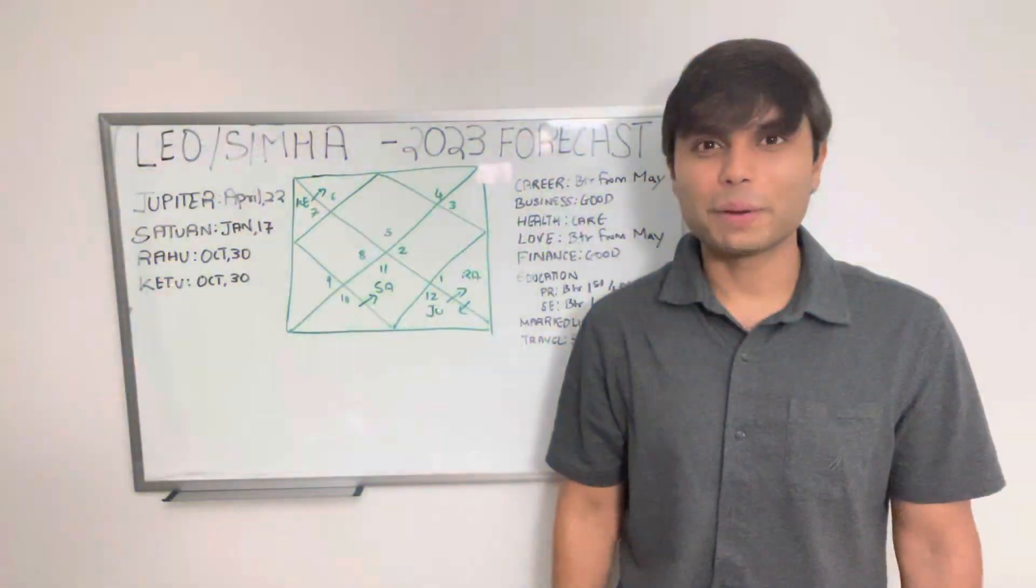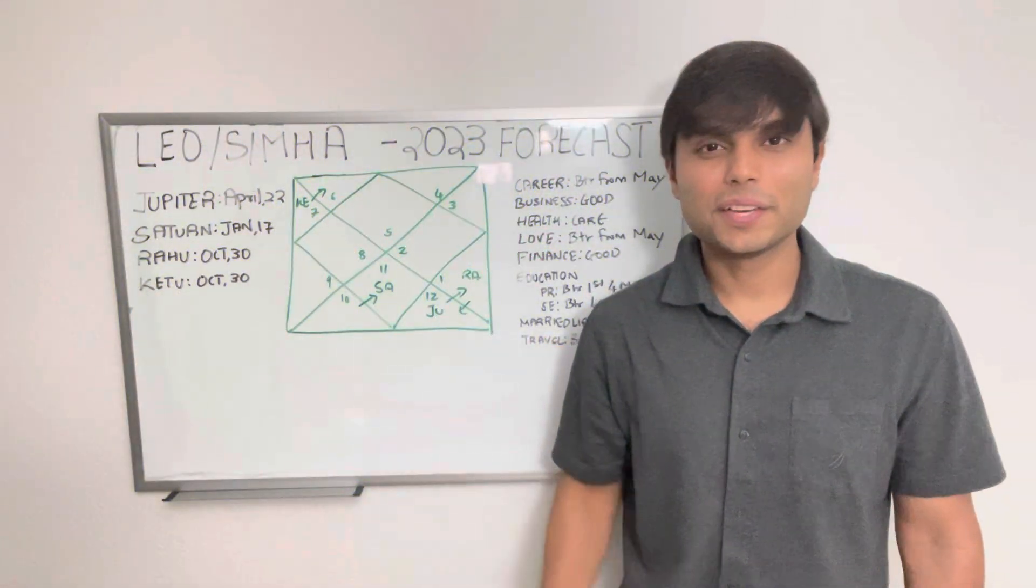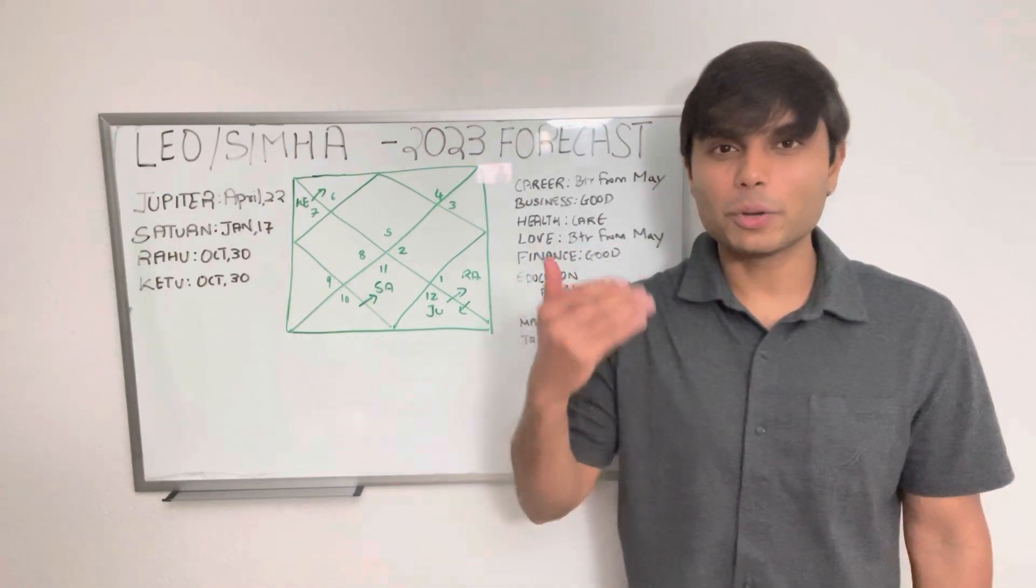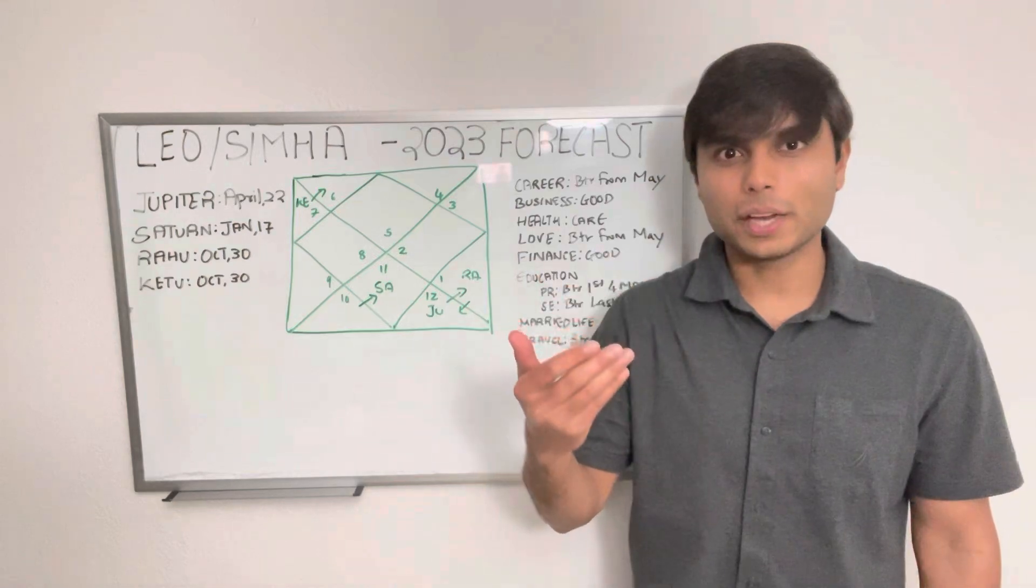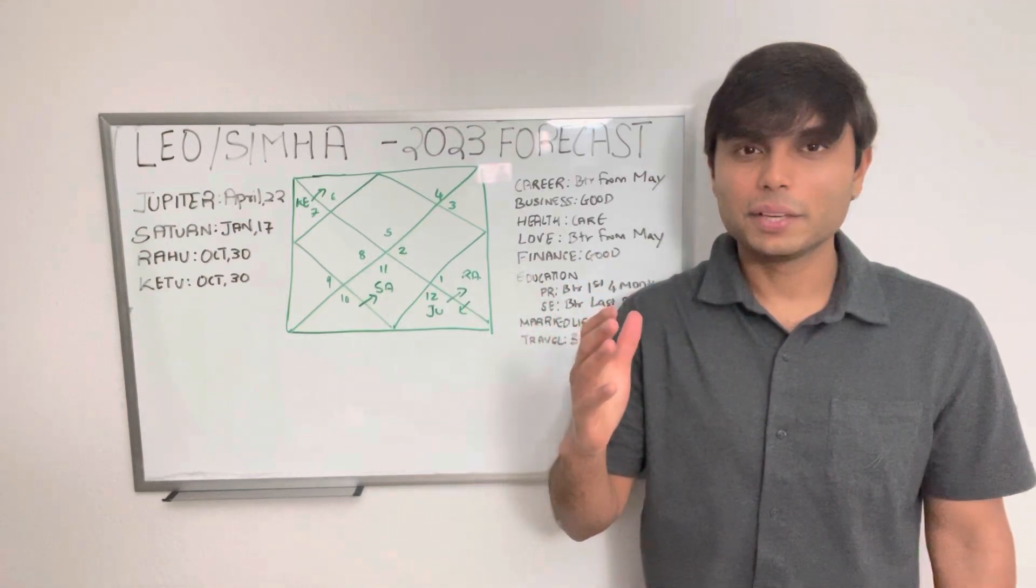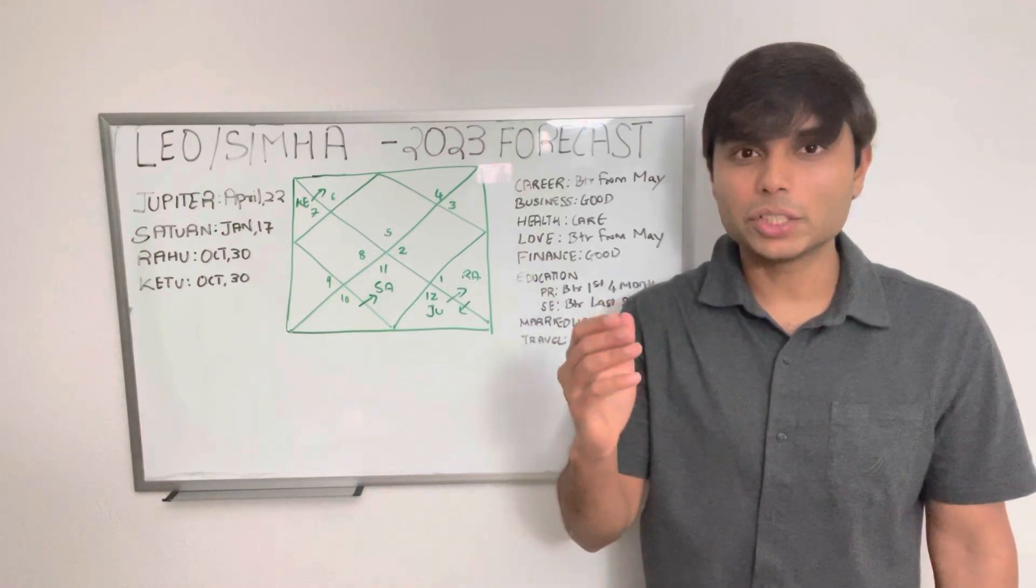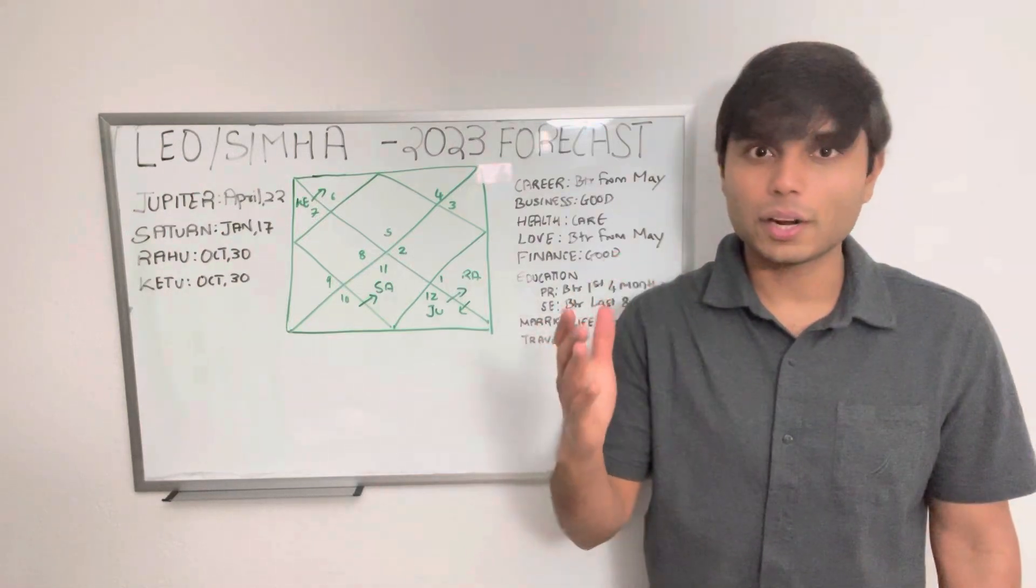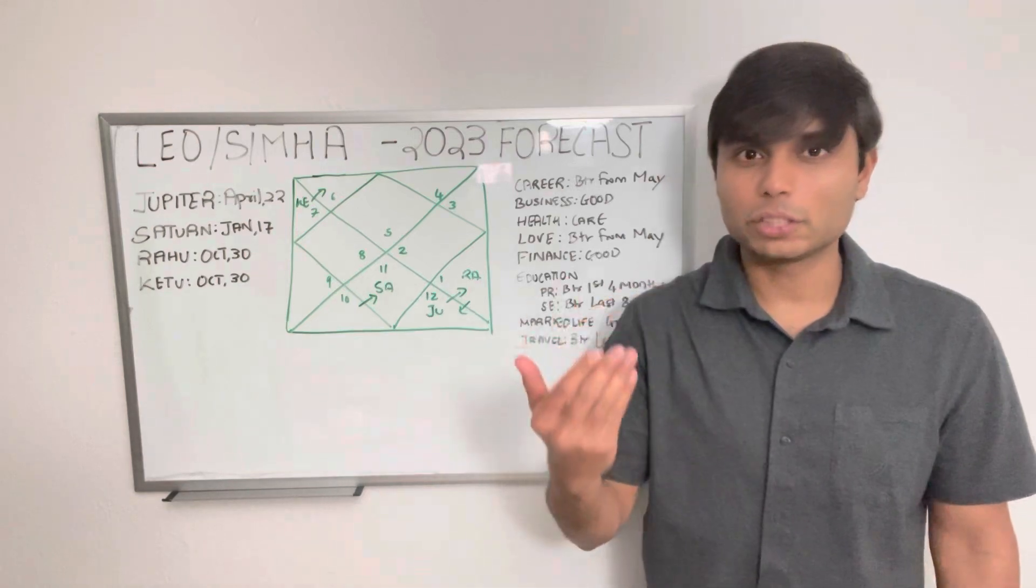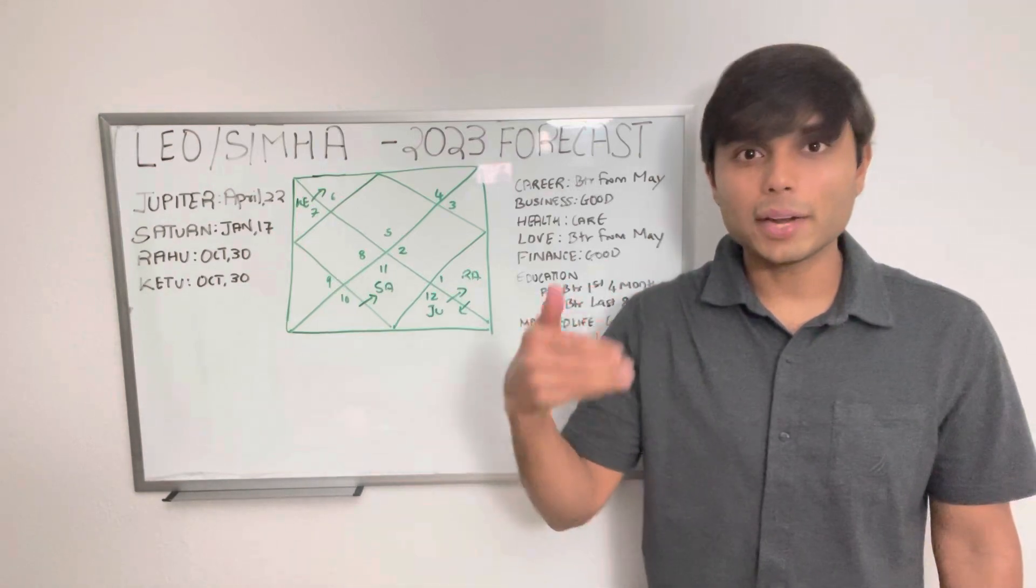Hi friends, welcome back to Astrology with Ninad. In this video, I am going to discuss the 2023 annual horoscope for the fifth sign in the zodiac, which is Leo, known as Simha Rashi. My predictions are mainly based on your moon sign, which is Chandra Rashi, or ascendant, which is Lagna Rashi per Vedic astrology.